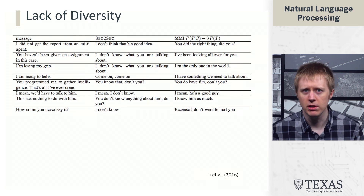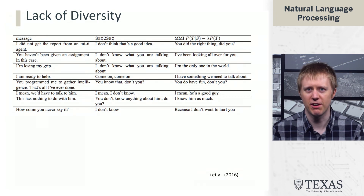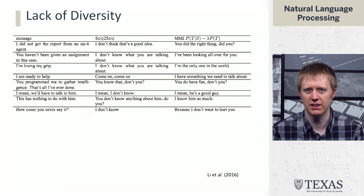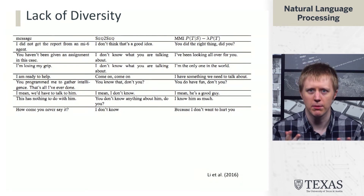A response like 'I don't know' has a high probability a priori, so the negative penalty term is high and it gets dispreferred. Looking at results, for example, given 'I did not get the report from an MI6 agent,' the system says 'you did the right thing, did you?' — it doesn't really make sense in context, but it avoids the generic 'I don't think that's a good idea.' In other cases, instead of 'I don't know,' it at least gives some response, though there are still significant problems.